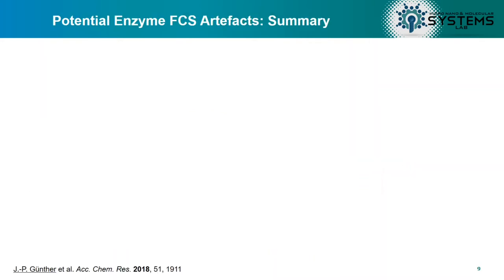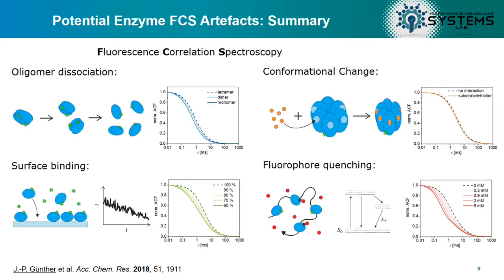We then tried to reproduce those results and found some problems with the original publications. We summarized what we believe are reasons why FCS — fluorescence correlation spectroscopy — results can be misinterpreted as diffusion enhancement. We identified four different potential artifacts, but today I will focus on fluorescence quenching, as this is the most interesting result.